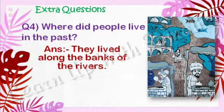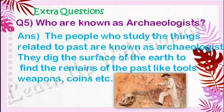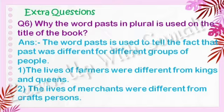Question number five: Who are known as archaeologists? The people who study the things related to the past are known as archaeologists. They dig the surface of the earth to find the remains of the past like tools, weapons, coins, etc. Question number six: Why is the word 'pasts' in plural used in the title of the book? The word 'pasts' is used to tell the fact that the past was different for different groups of people — for example, the lives of the farmers were different from kings and queens, and the lives of merchants were different from craftspersons.